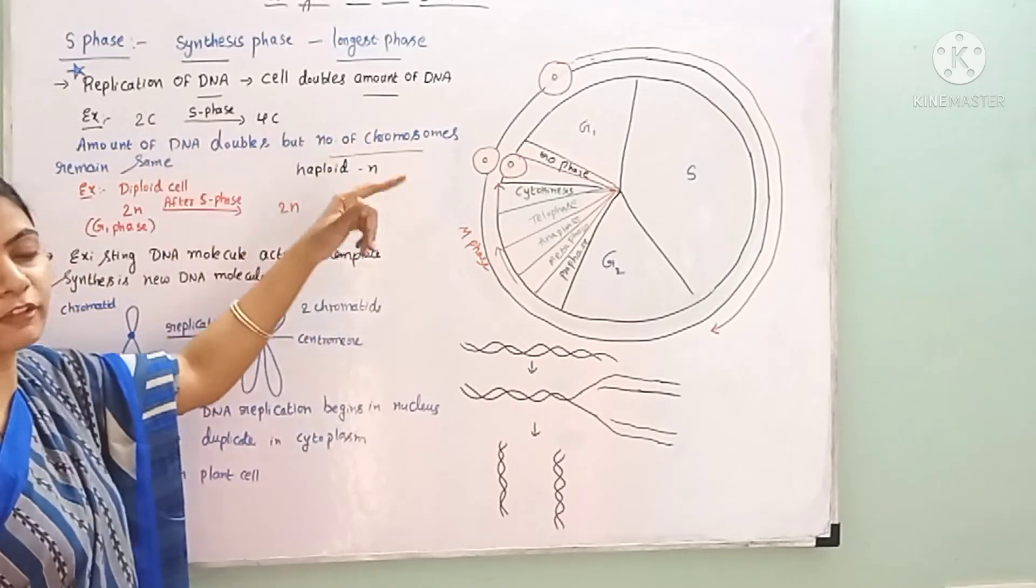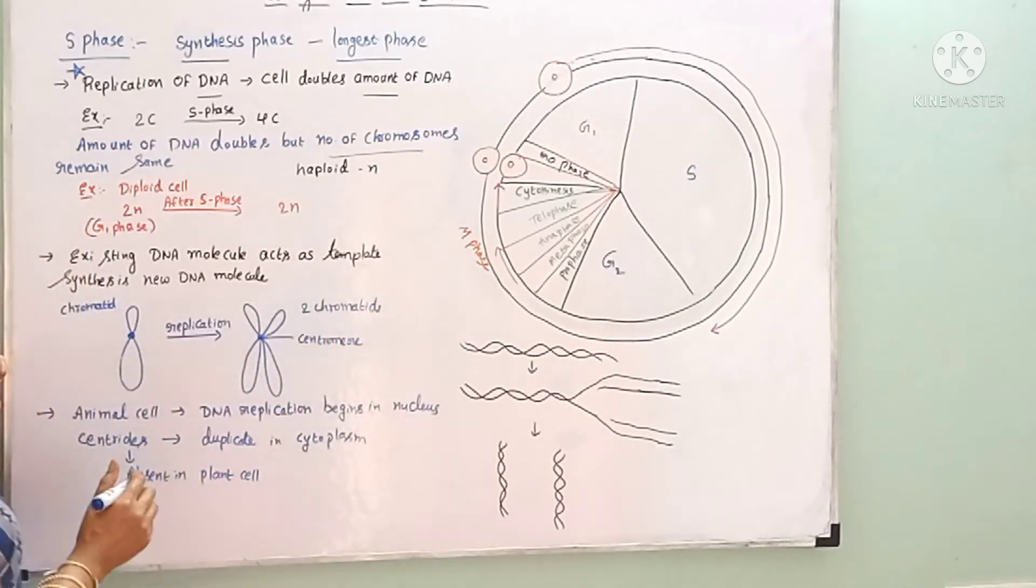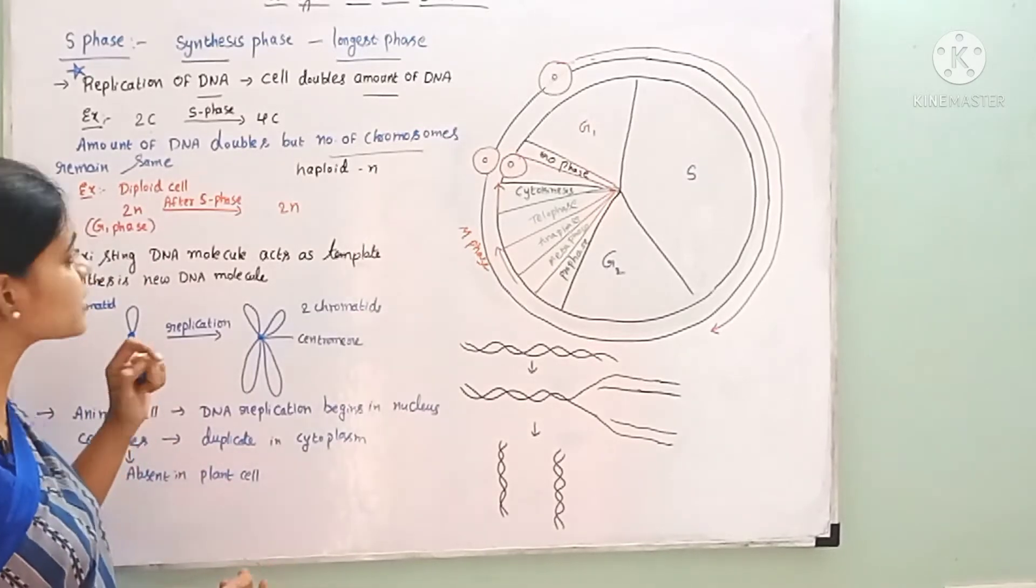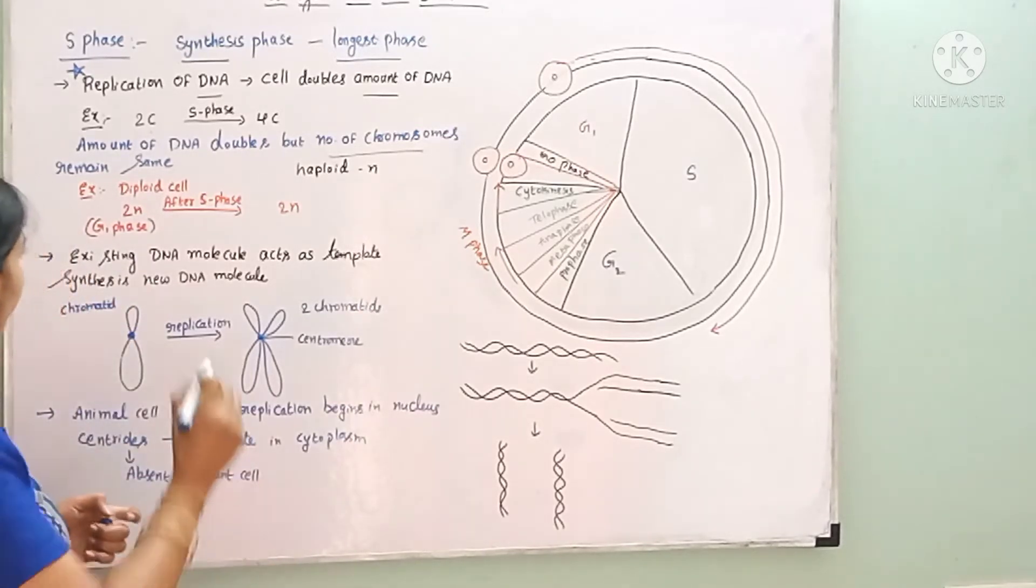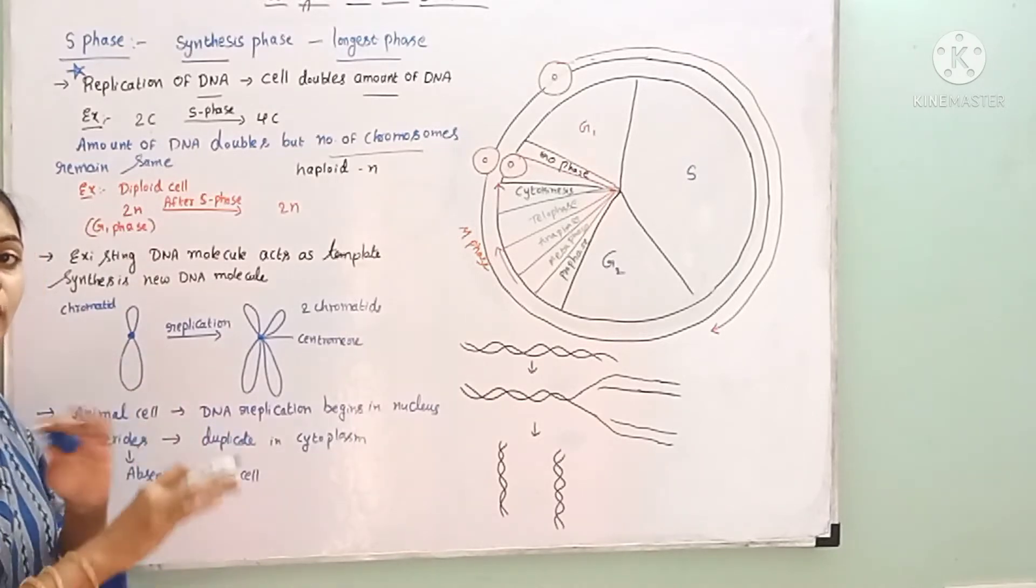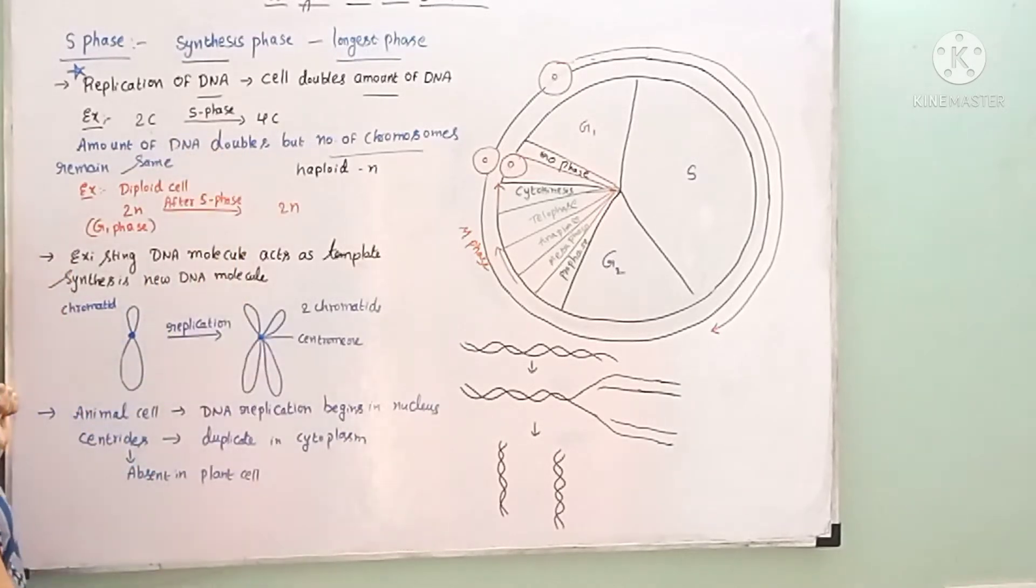The C value represents the amount of DNA in the cell. Amount of DNA doubles, but the number of chromosomes will not change.